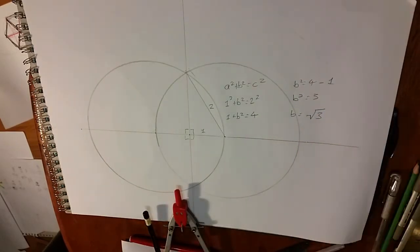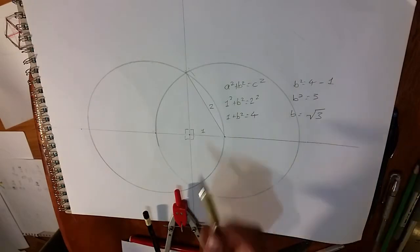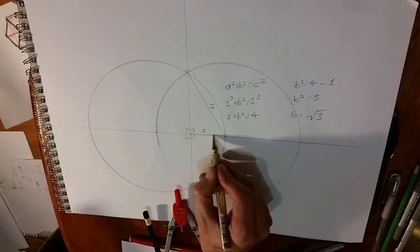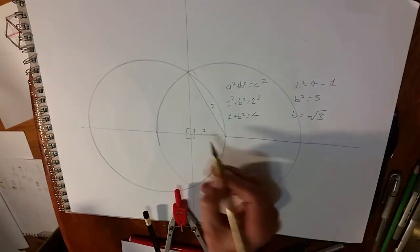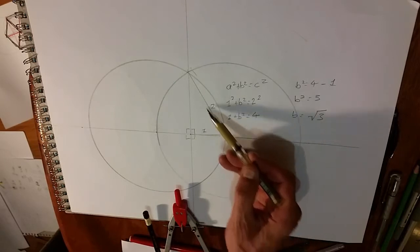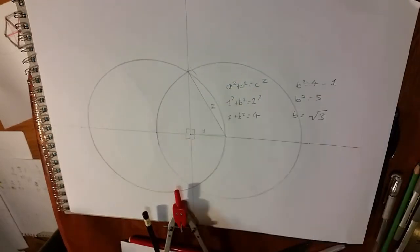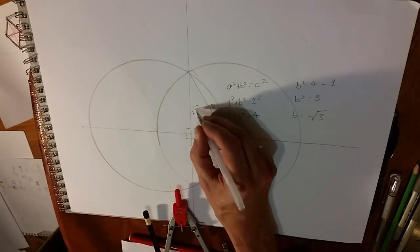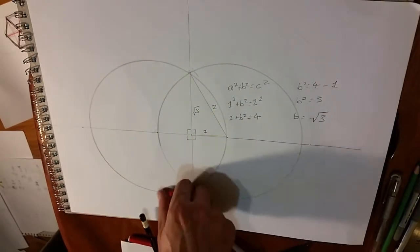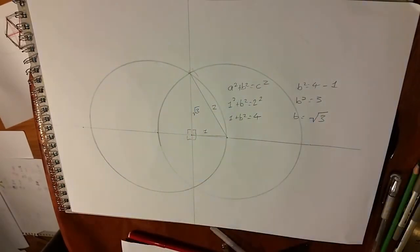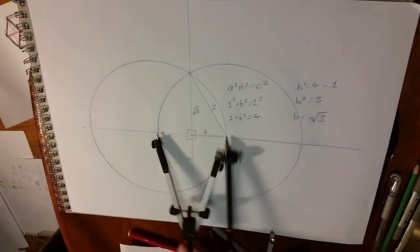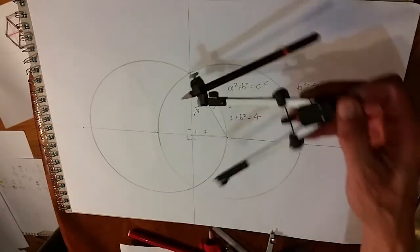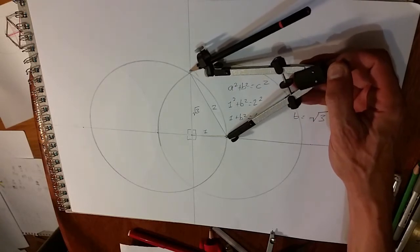So if we define this distance as 1, we know that that is 2. Therefore, this would have to be the square root of 3. And we've still kept our compass at the same size, which is now defined as 2.